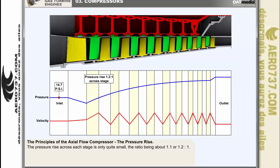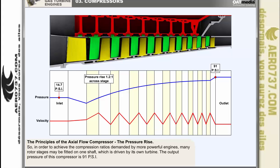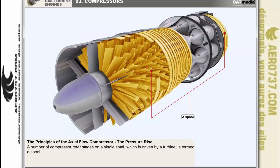The pressure rise across each stage is only quite small, the ratio being about 1.1 or 1.2 to 1. This means that in the first stage the pressure might only increase by about 3 pounds per square inch. In order to achieve the compression ratio demanded by more powerful engines, many rotor stages may be fitted on one shaft driven by its own turbine. Assuming a pressure ratio of 1.2 to 1 for each of 10 stages, the output pressure would be in the region of 91 pounds per square inch. This arrangement — a number of compressor rotor stages on a single shaft driven by a turbine — is termed a spool.